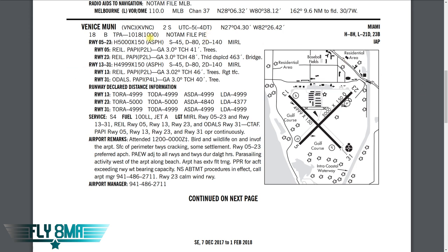Coming down, we have runway 5-23. It has dimensions of 5,000 feet long by 150 feet wide — a hard surface runway denoted by H, and it's asphalt. For weight limits: single wheel airplanes 45,000 pounds, dual wheel airplanes 80,000 pounds, and dual wheel in tandem 140,000 pounds. Those are the maximum landing weights the runway is certified for.